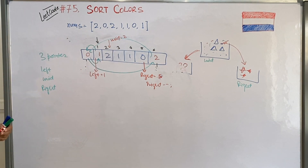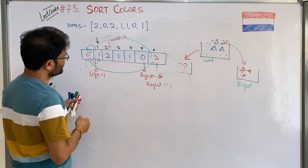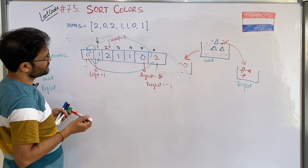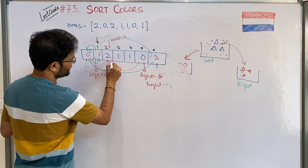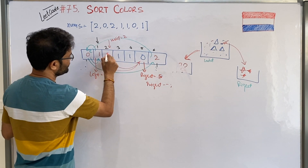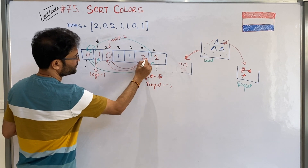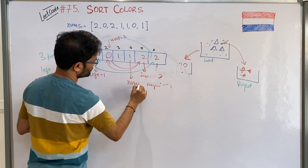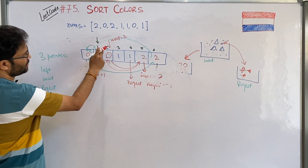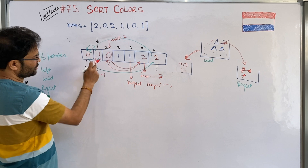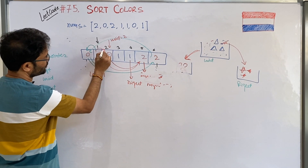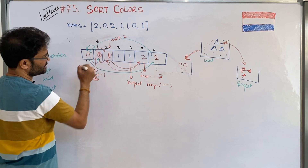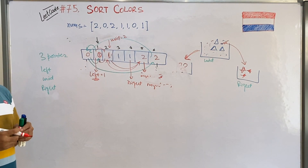If you apply this logic it will automatically work. If this is 2, send it to the right side and swap. It becomes 2 on the right and the swapped element comes to mid. If this is 0, put it on the left side — left is at position 1, so swap it: this becomes 1 and this becomes 0. So you can see it is going to solve it.